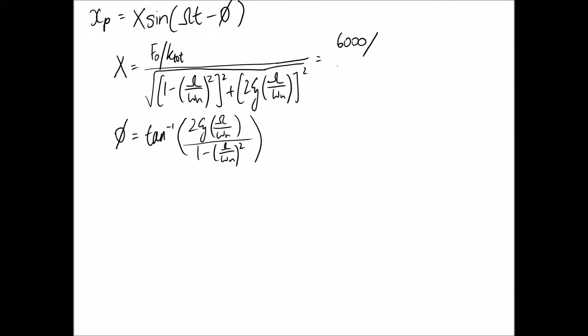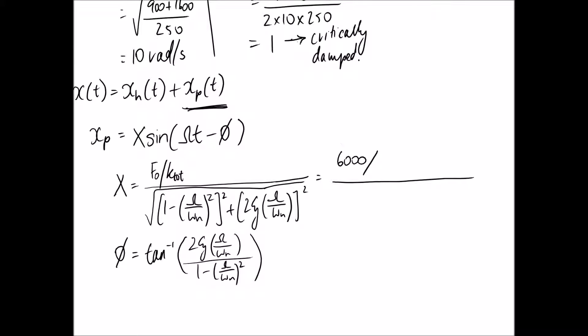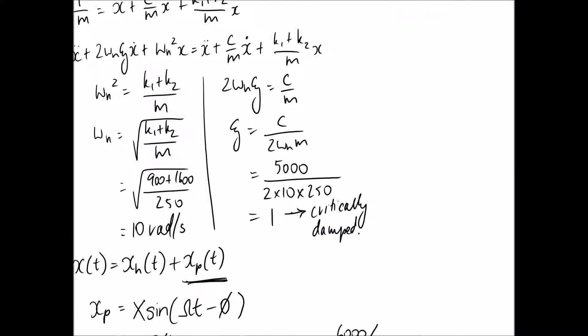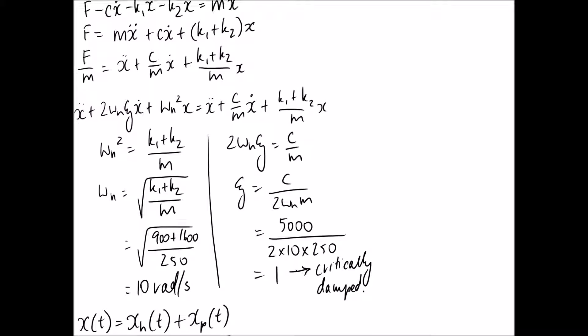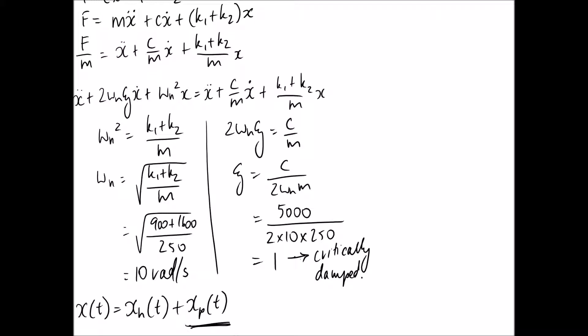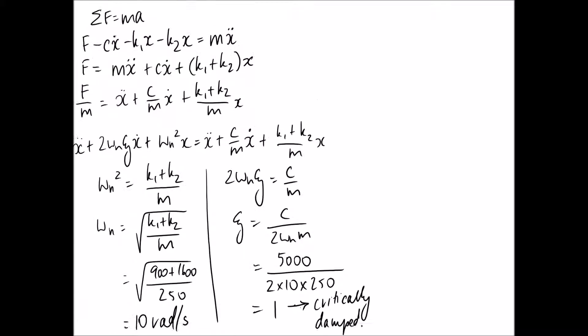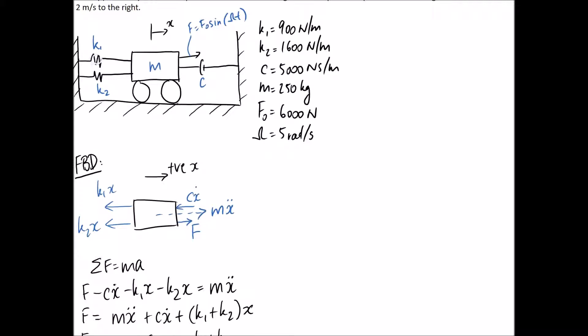K-total is the total stiffness in your system, and the easiest place to get this is probably just to scroll back up and look at your equation of motion. So this part here, when you have it written in this form, represents the total stiffness in your system. And if you scroll back to your free body diagram as well, this is your total stiffness in your springs.